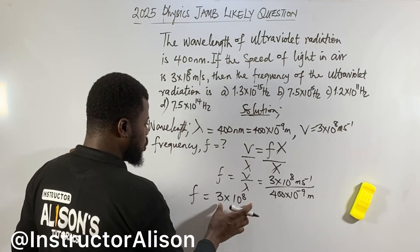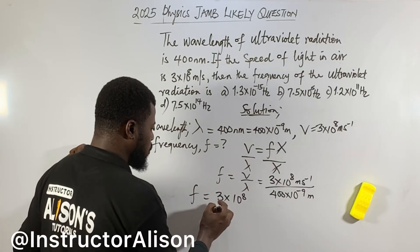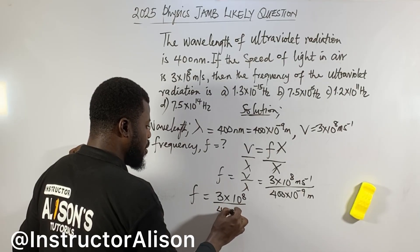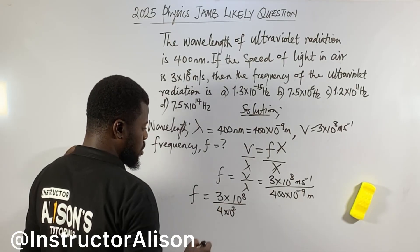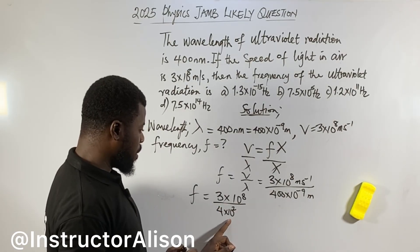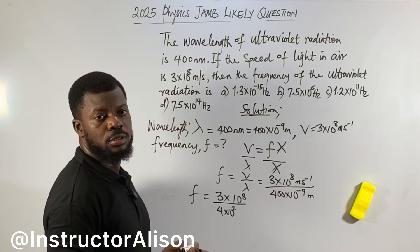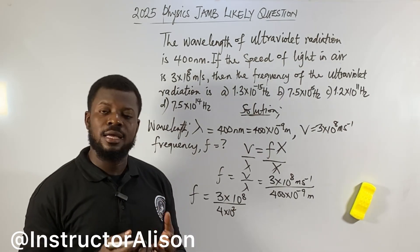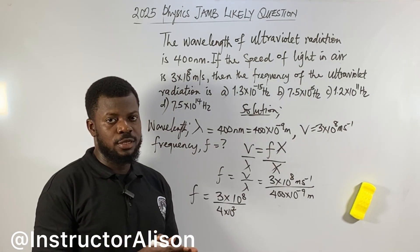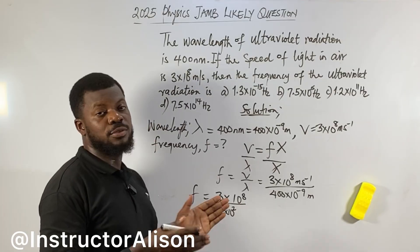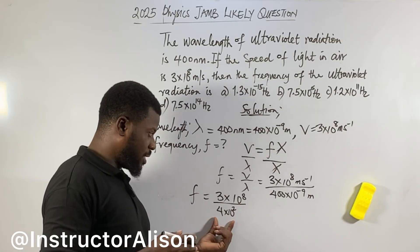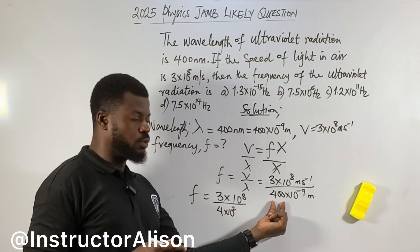We could just work on the stuff we have here. 4 times 10 to the power of 2 is 400, because 10 to the power of 2 means 10 times 10, which is 100. So 4 times 100 is 400. So the standard form of 400 is 4 times 10 to the power of 2.